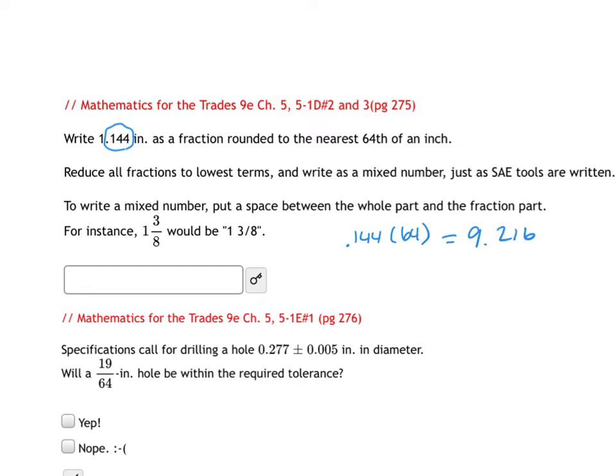So 9.216 is closer to 9 than it is 10. So 1.441 is approximately equal to 1 and 9/64ths. And there isn't much more I can do with that. I'm not going to be able to reduce 9/64ths because it doesn't reduce.